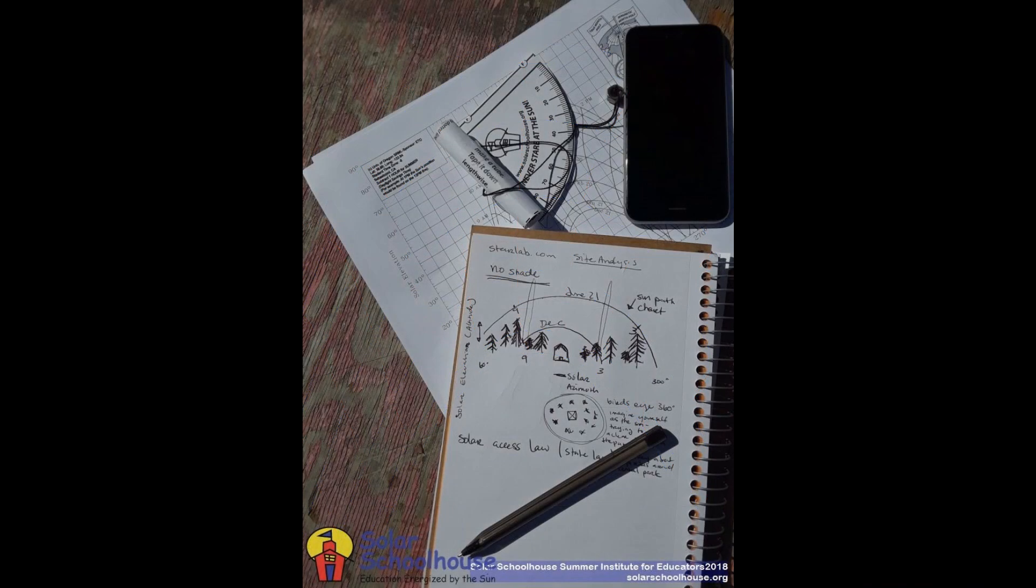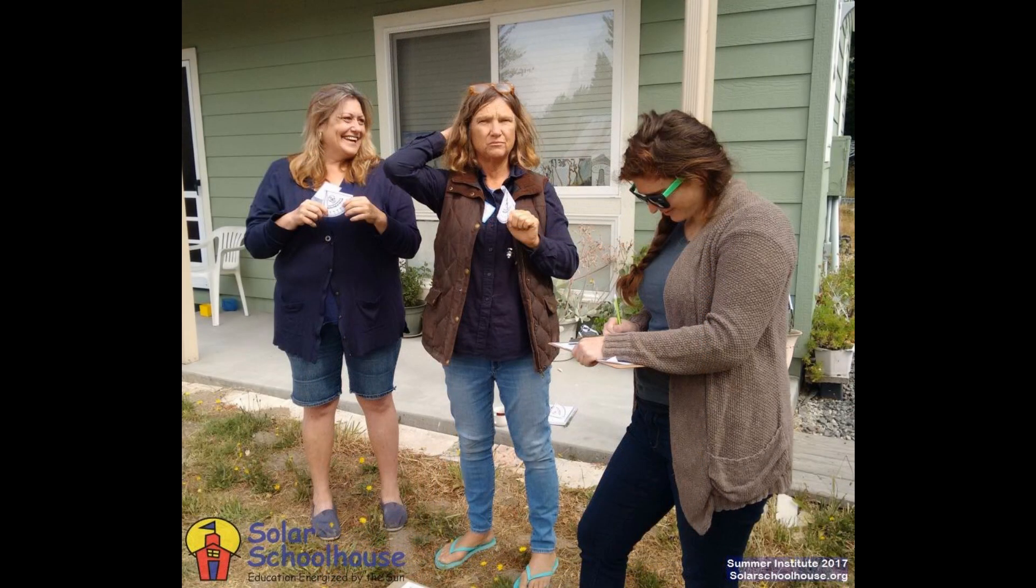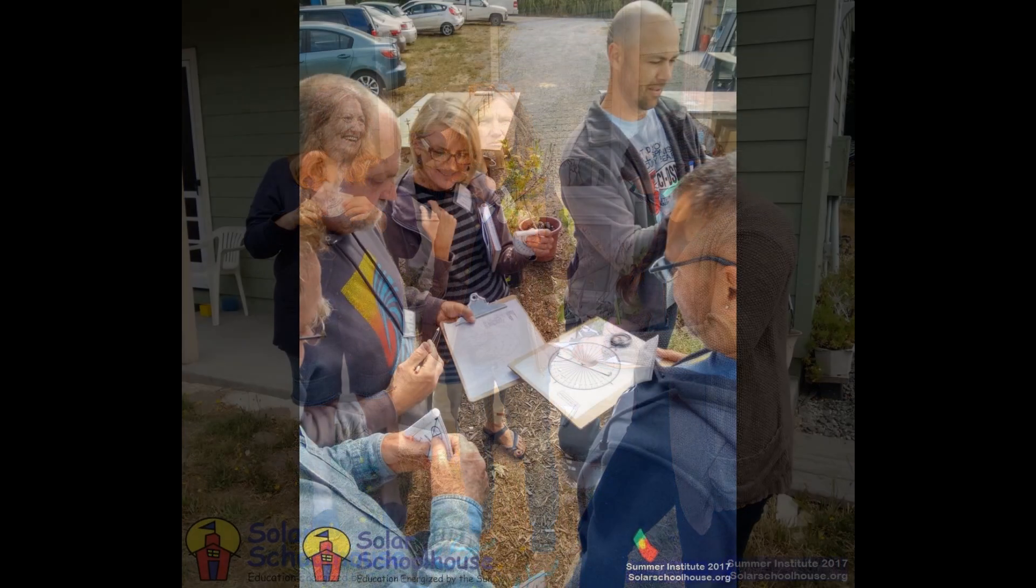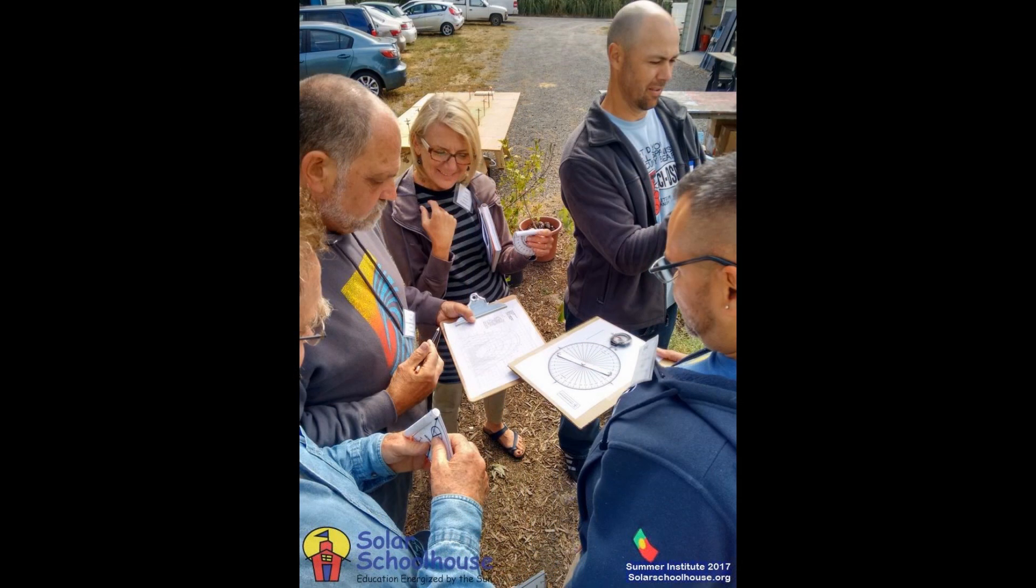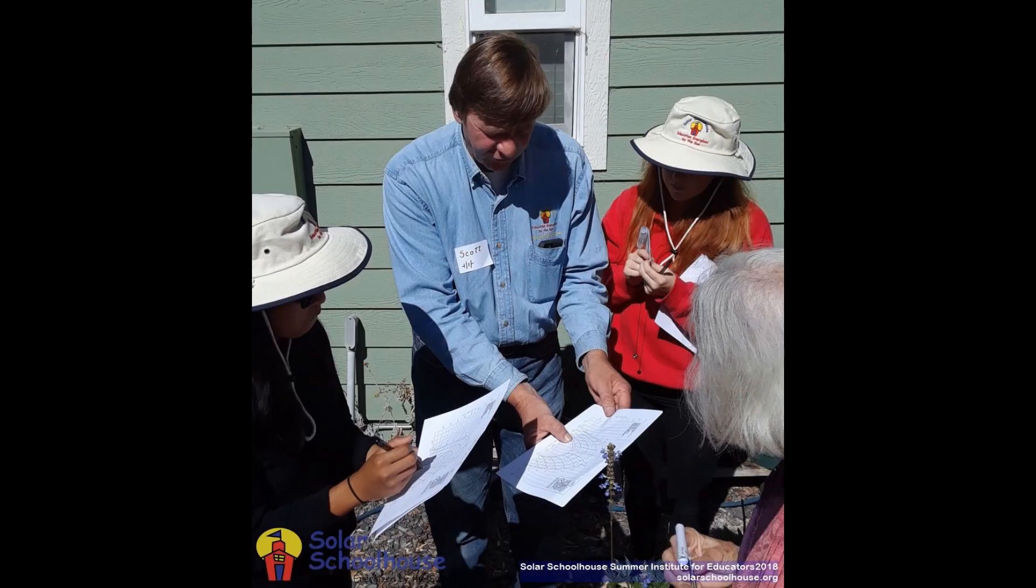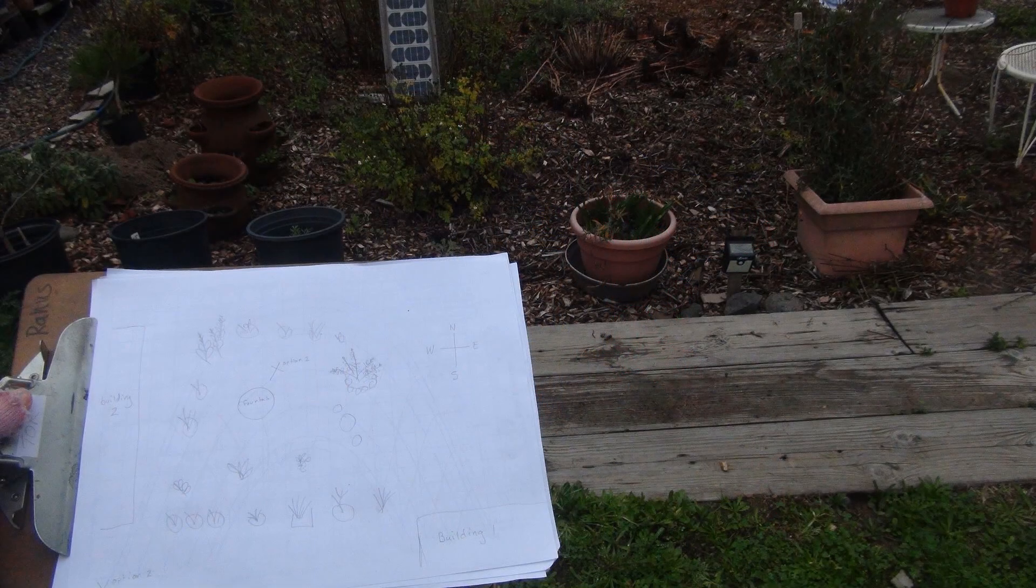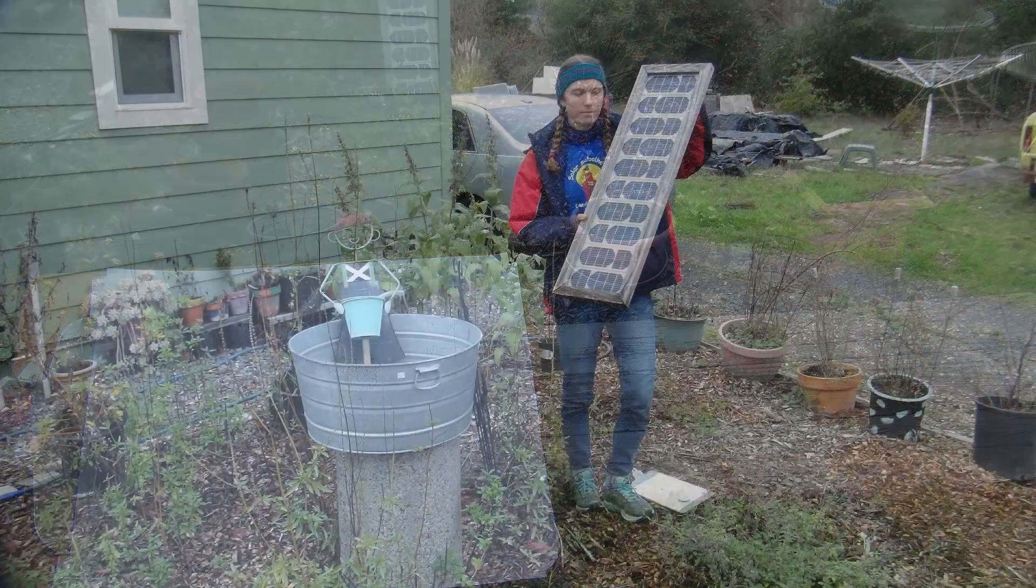Now you are ready to begin the site analysis. Note that you can conduct the analysis even on a cloudy day, since we are mainly measuring shade obstacles and the position of the sun at the moment of your analysis is irrelevant. First, make a bird's eye sketch of the site, noting buildings, trees, and a few potential spots where the solar panel could go.